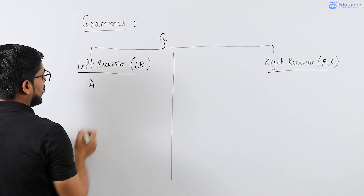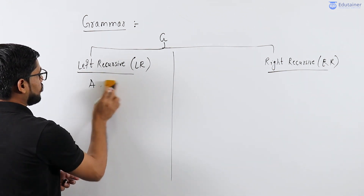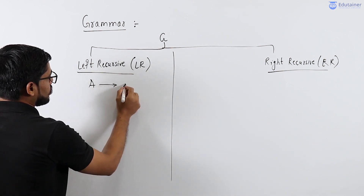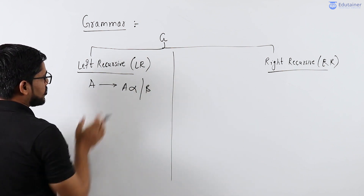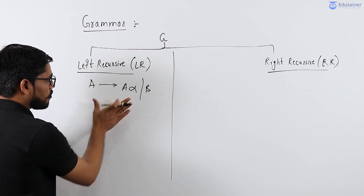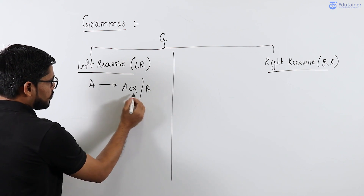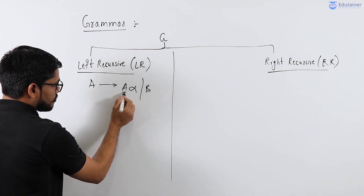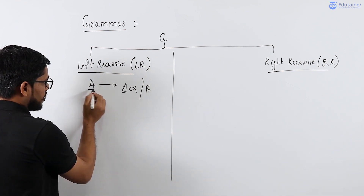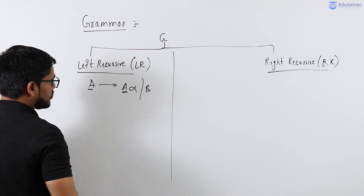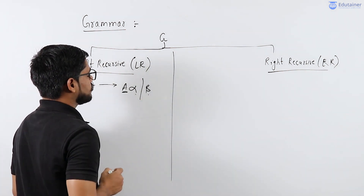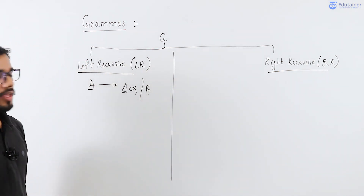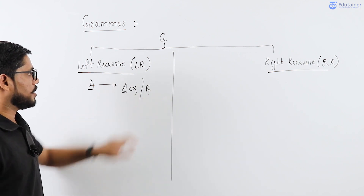Whenever a production A derives A alpha or beta, such type of production is called left recursive and such type of grammar is called left recursive grammar. Why? Because if you observe in the right hand side, the first term is the variable itself — the left hand side variable and the left most variable in the right hand side are the same. Here A is the non-terminal and alpha and beta is the terminal part.